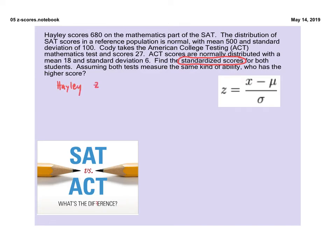So Haley's z-score will be, based on our formula, 680, which is the value that she scored, minus the mean, which is 500. And we will divide the whole thing by the standard deviation of 100. So 680 minus 500 divided by 100 is a z-score of 1.8.